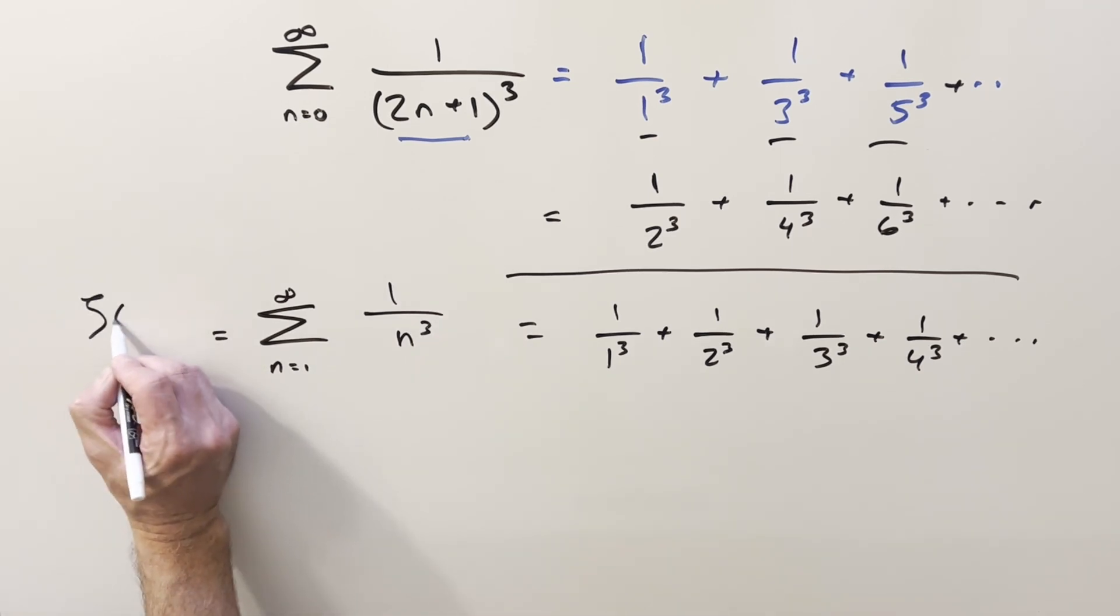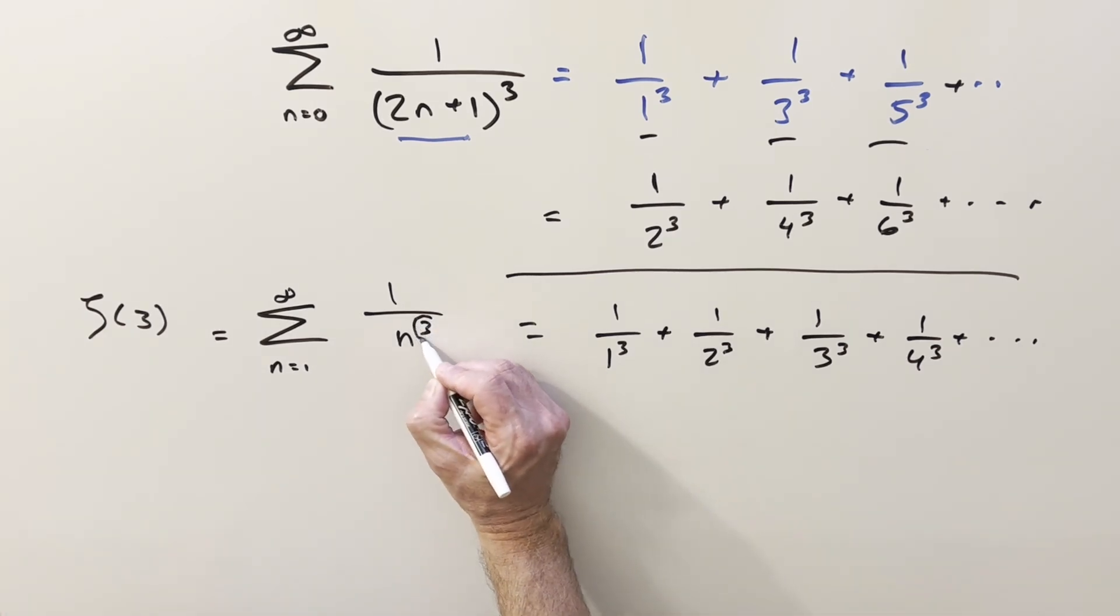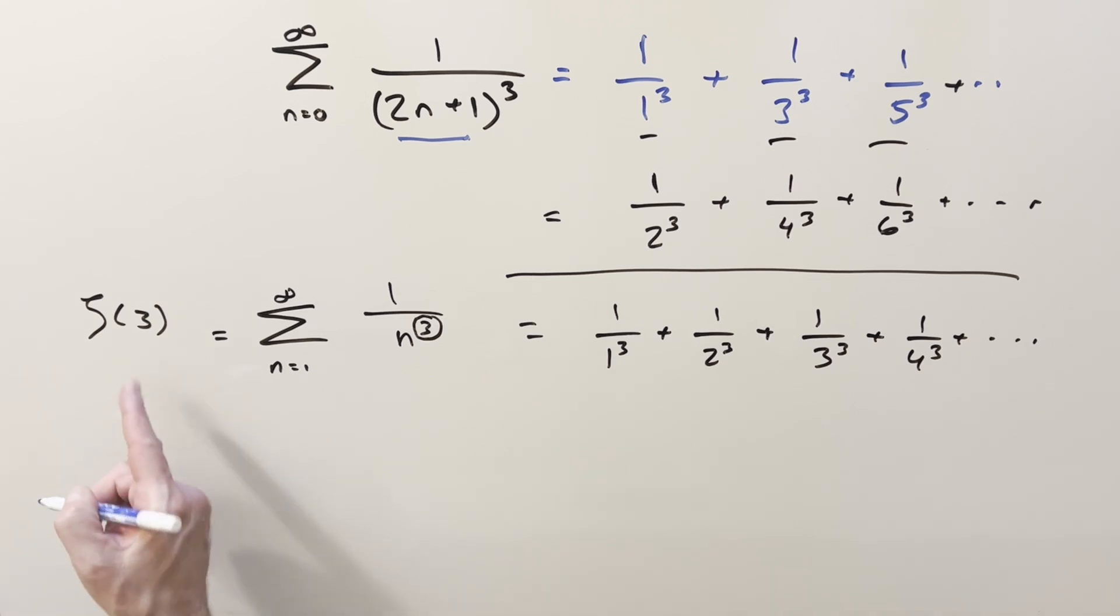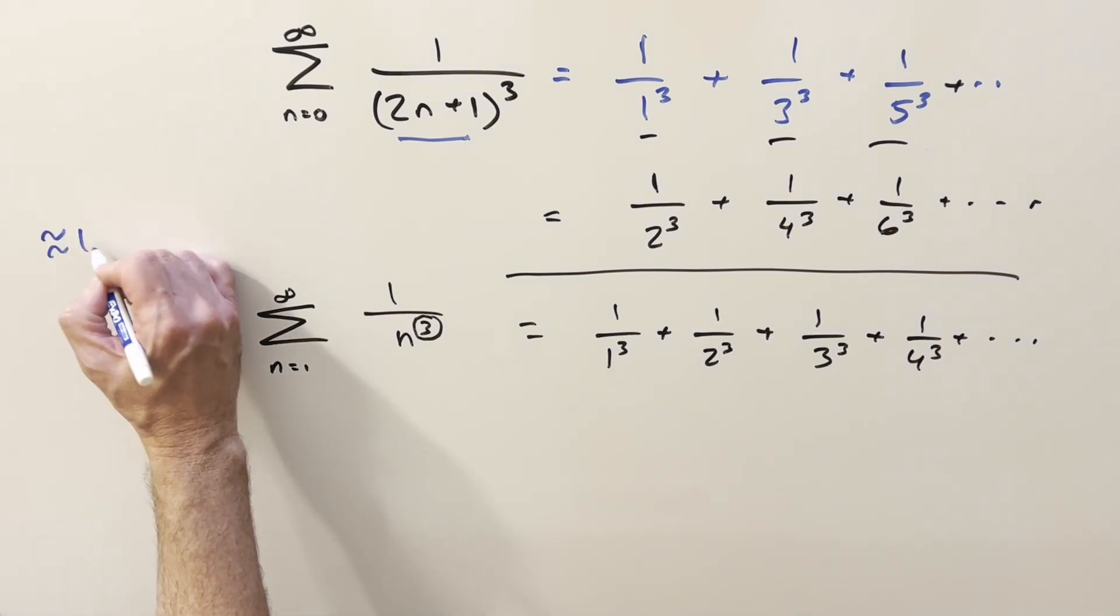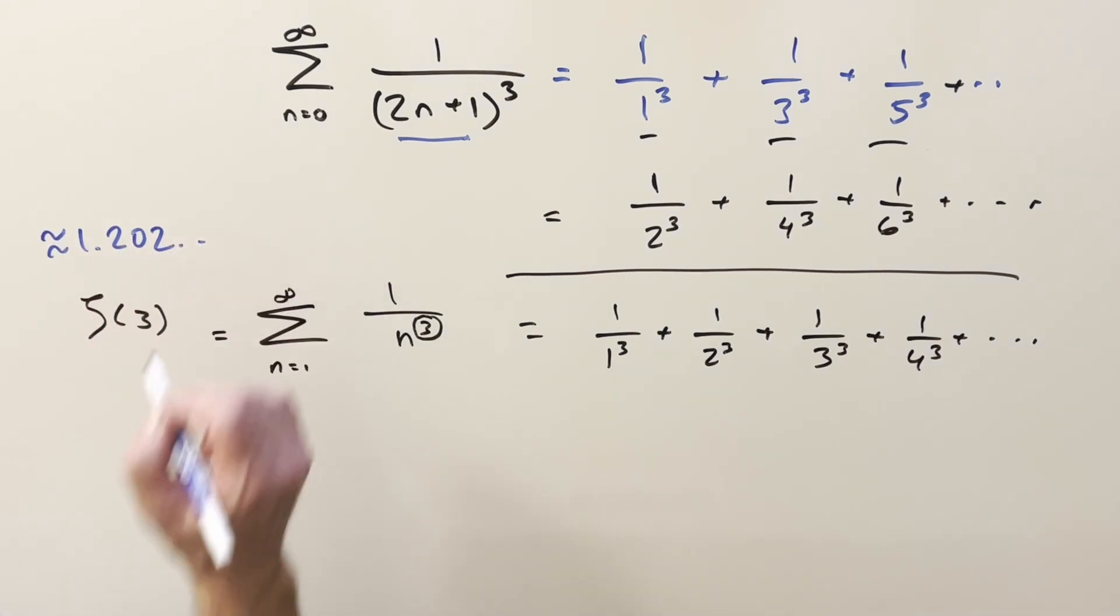This is actually the Riemann zeta function at 3, which is exactly the definition for the Riemann zeta function with input 3. This is a well-known value, approximately 1.202.